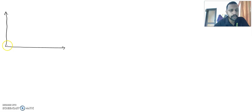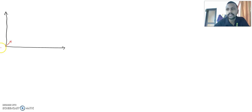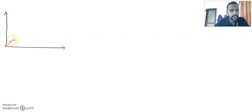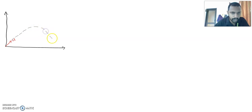A projectile is any substance which is projected with an initial velocity and further on it is moving under the influence of gravity. If you have a substance which is projected with an initial velocity u in a direction and it is moving under the influence of gravity, that substance is called a projectile.